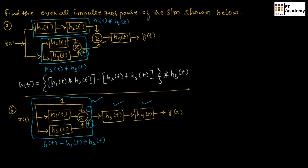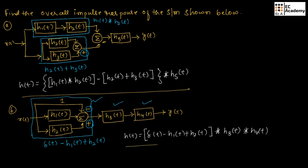Now, these three systems are in cascade form. Therefore, the overall impulse response we can write as H of t is equal to delta of t minus H1 of t plus H2 of t, convoluted with H3 of t, convoluted with H4 of t. This is the overall impulse response of the given system.